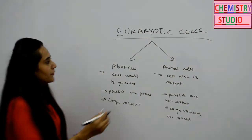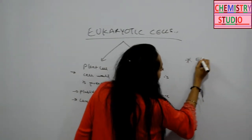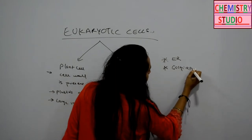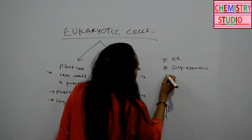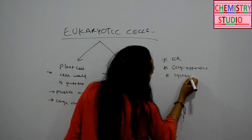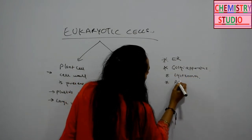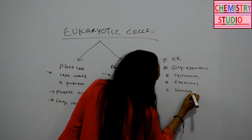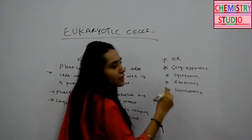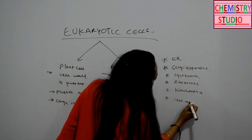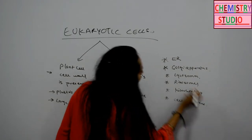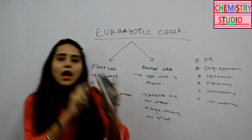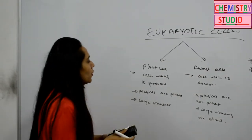Apart from these differences, the organelles which are present in both plant and animal cells are the same. These include the endoplasmic reticulum, Golgi apparatus, lysosomes, mitochondria, and the cell membrane — the envelope surrounding the cell. Now we will discuss about these organelles one by one. First of all, let's discuss about the outer membrane, which surrounds the cell — that is the cell membrane.